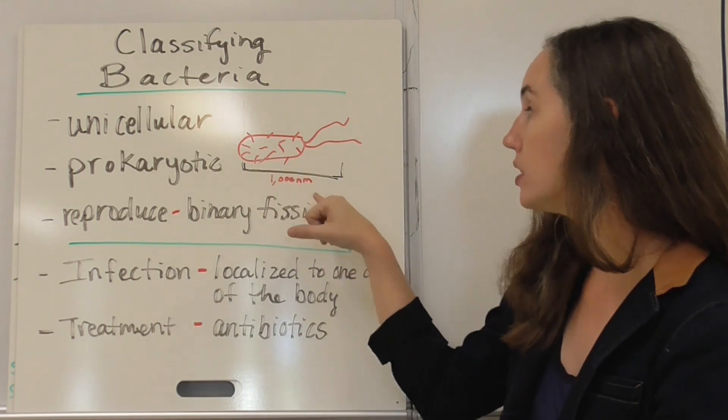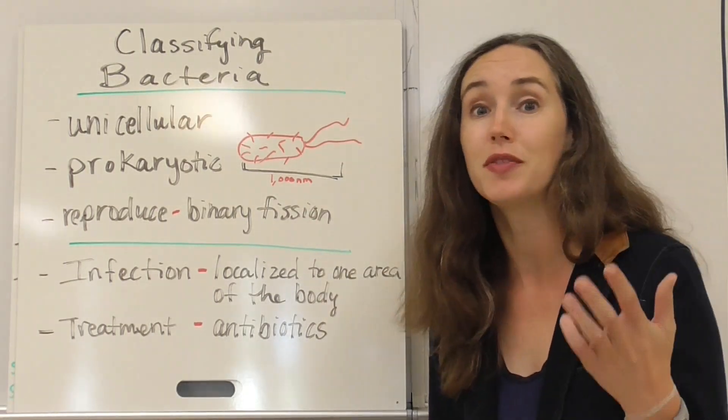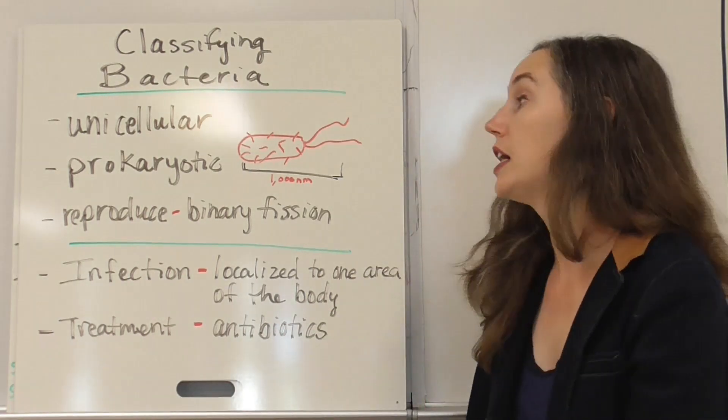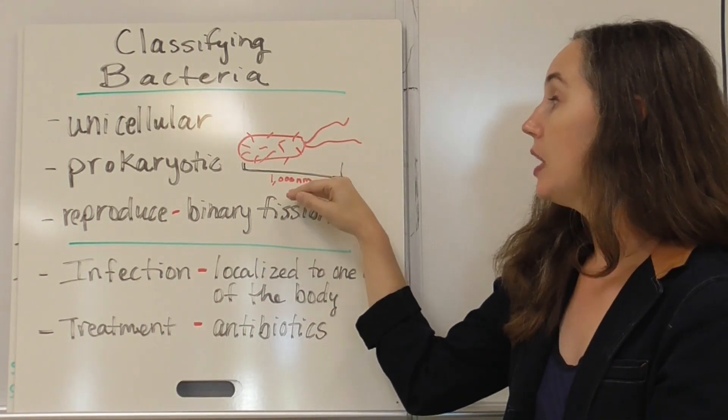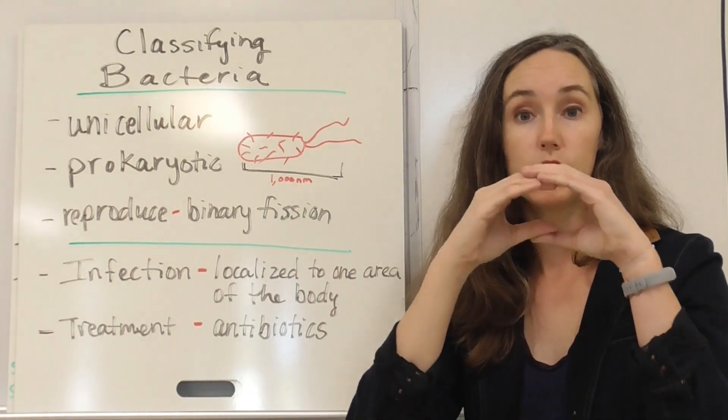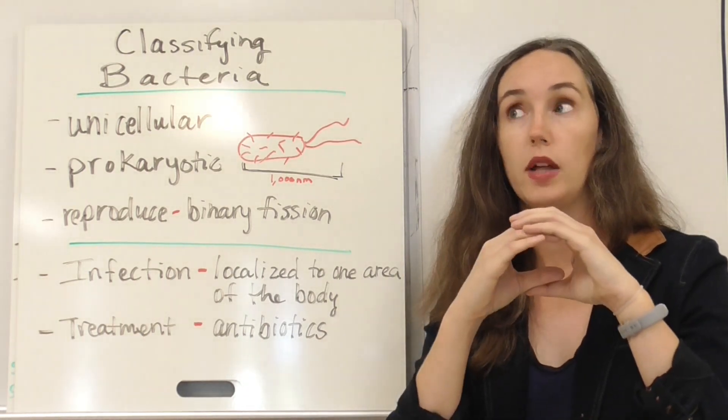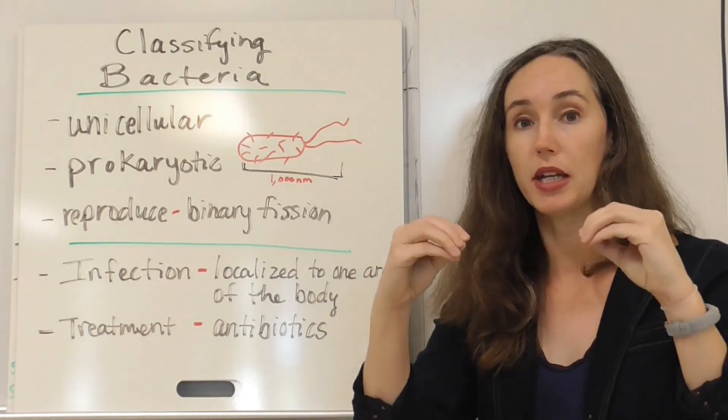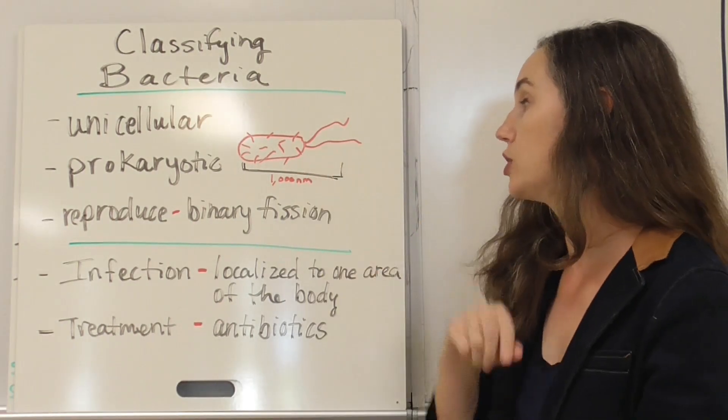Bacteria are very small. In fact, they're typically about 1,000 nanometers, which is about 50 times smaller than any regular plant or animal cell that you and I have. So they're very small, and they reproduce asexually with a process called binary fission. And in binary fission, your one bacteria will replicate its circular DNA. So initially it had one, now it has two, and then the cell membrane and cell wall will split, and now you have two genetically identical daughter cells that are the same as the original parent cell.